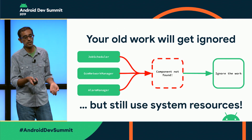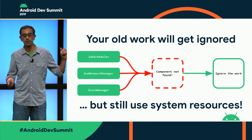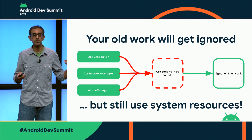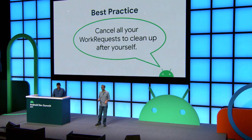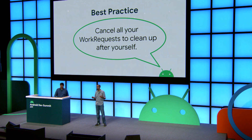But there's a subtle problem here: it'll still use system resources. For example, if there's a connectivity constraint, JobScheduler is still tracking when you have network, and when it finds a network, it'll try to tell your app to run — but your app no longer has WorkManager. So you've used a bunch of system resources to do nothing, and that's not good citizenship. The answer is you should cancel all your work requests to clean up after yourself. You should always realize that WorkManager exists within your app, but there are repercussions outside of your app — the rest of the OS also knows about it.